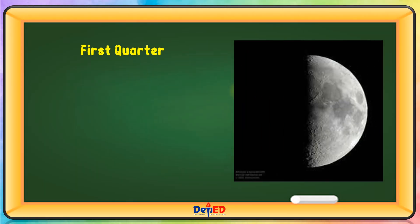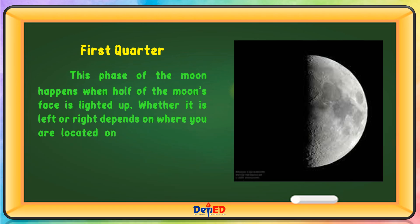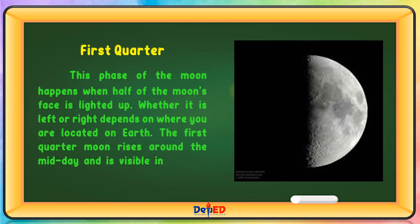First Quarter — This phase of the Moon happens when half of the Moon's face is lighted up. Whether it is left or right depends on where you are located on Earth. The first quarter moon rises around midday and is visible in the sky.